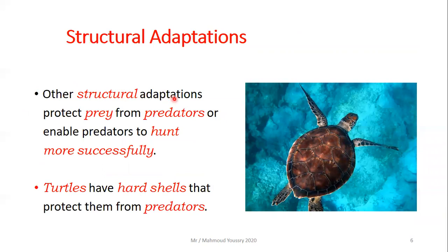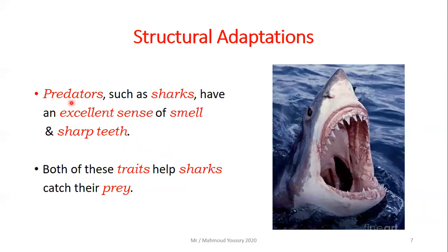Other structural adaptations protect prey from predators or enable predators to hunt more successfully. Turtles have hard shells that protect them from predators. Also predators such as sharks have an excellent sense of smell and sharp teeth. Both of these traits help sharks to catch their prey.